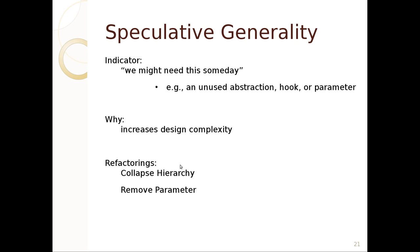Speculative generality is basically adding features to code that you might use someday — whether a hook, abstraction, or parameter. While it could be really useful, the problem is it increases design complexity, violates the keep-it-simple principle, and causes pain because you've got to maintain it and write tests for it too. One thing to do is collapse the hierarchy — if you've got a lot of specialization, maybe you don't need it. Another thing you can do is remove that optional parameter. You should have the courage to do so because you're using version control — getting rid of complexity is pretty easy.